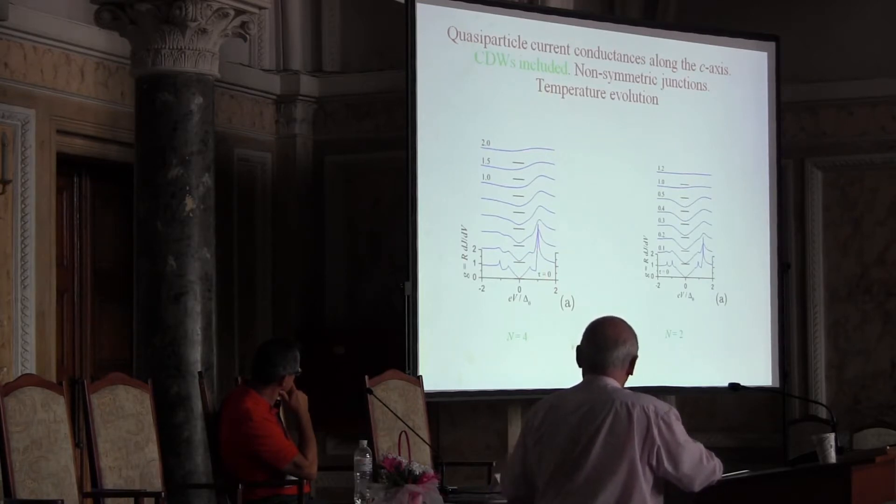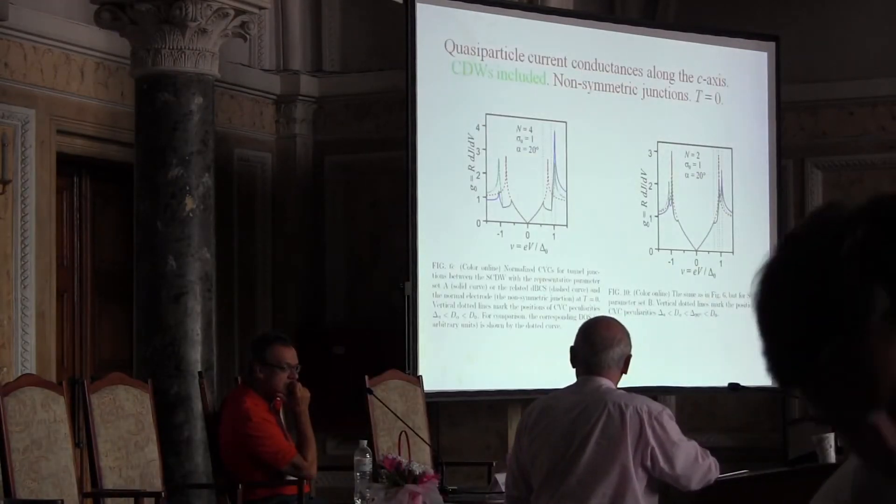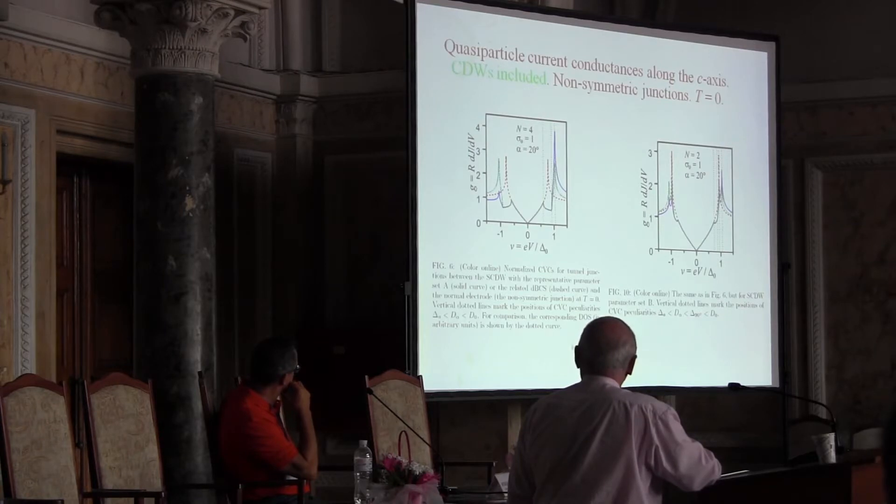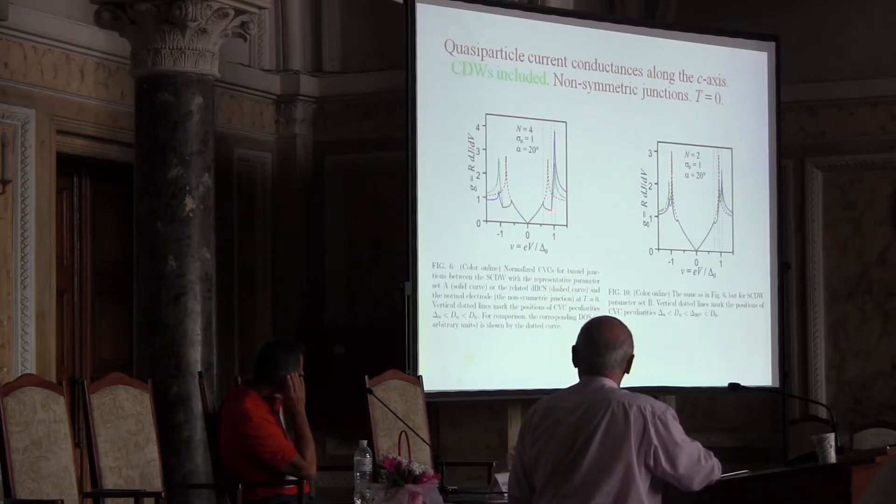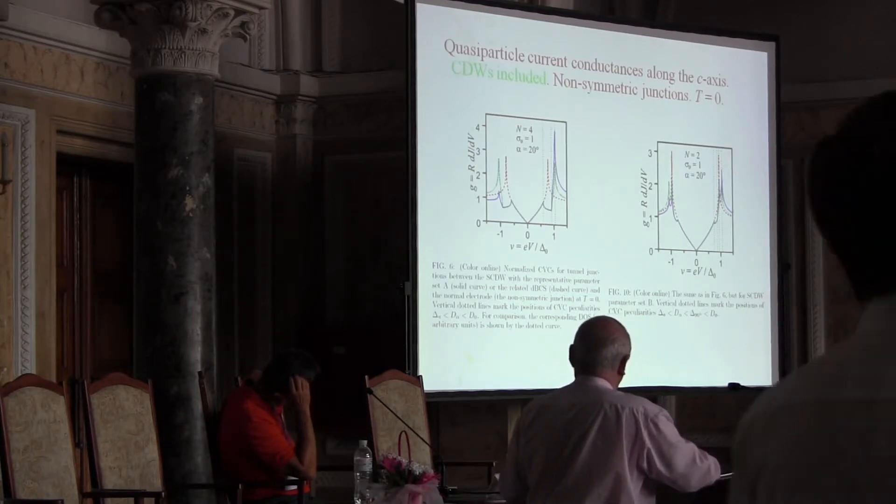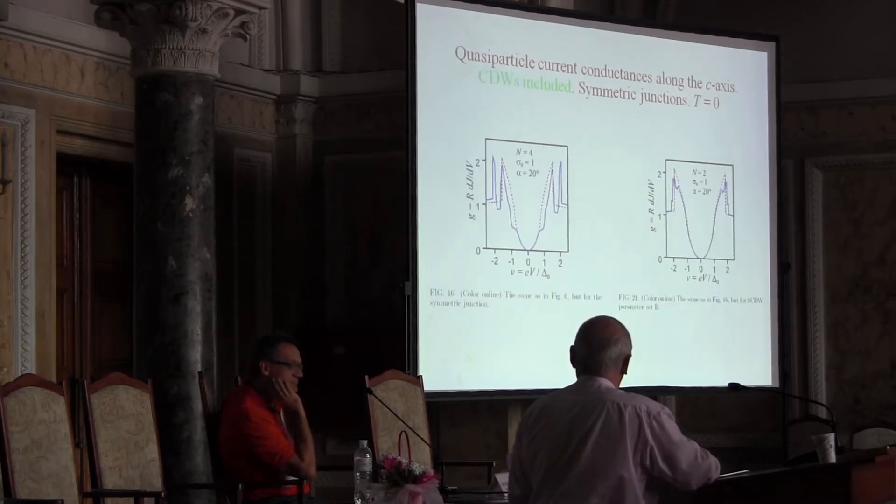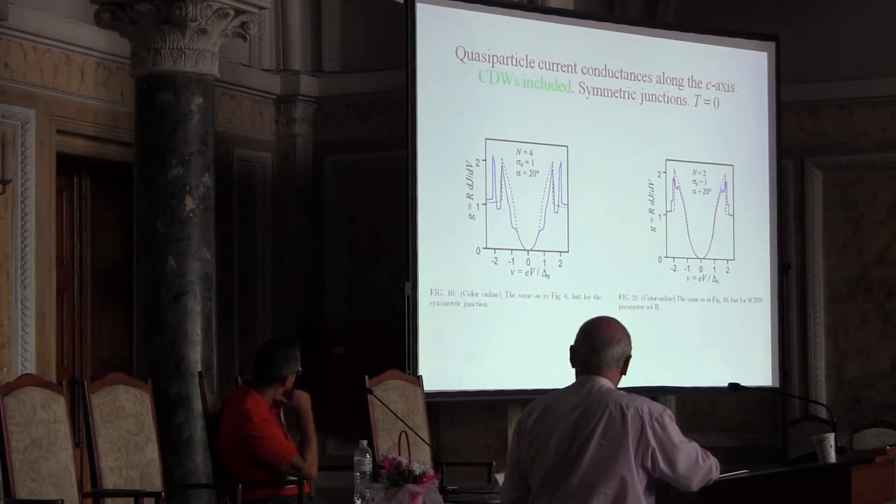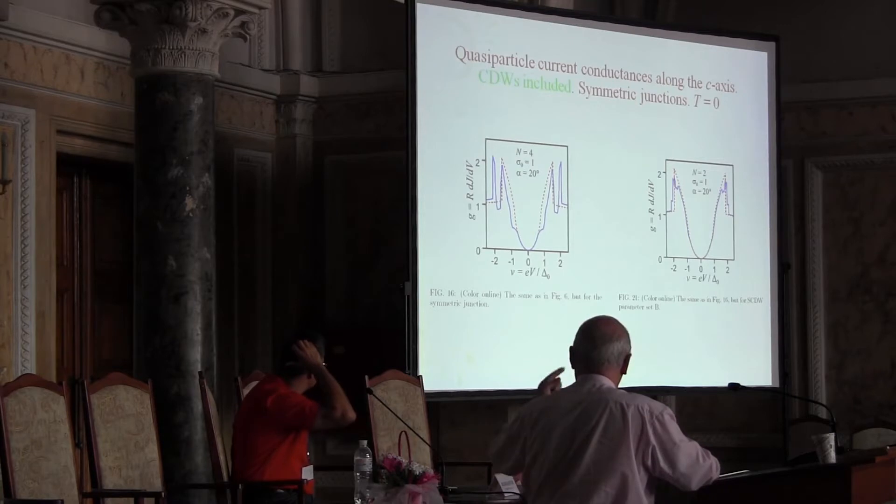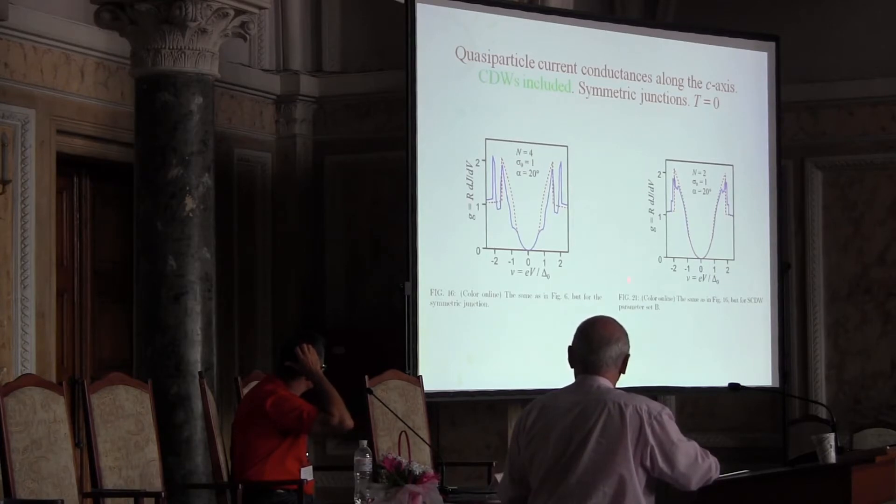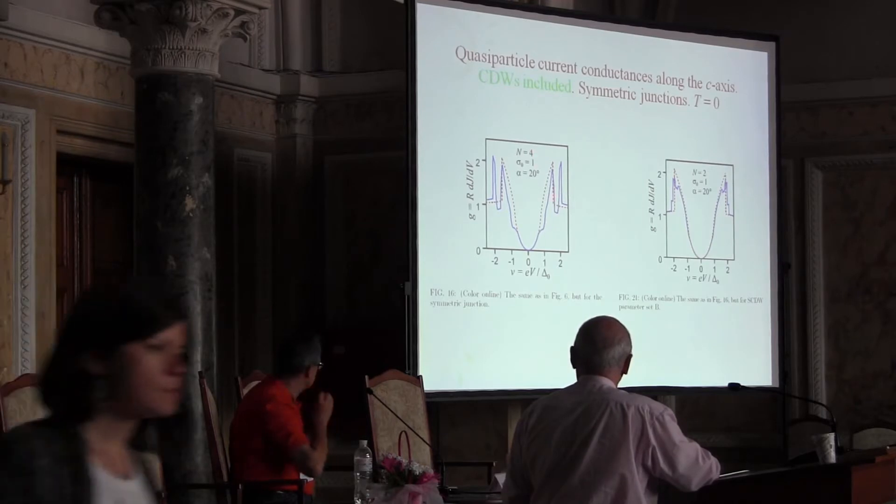For superconductors, although we have non-symmetric junctions, we have symmetric current-voltage characteristics. Here it becomes non-symmetric and very involved and it changes with temperature. First superconductivity disappears, then this charge density wave disappears. We calculated all this and you see what this red one means: superconductivity, and blue ones, gentle ones, it means you have superconductivity with charge density wave.